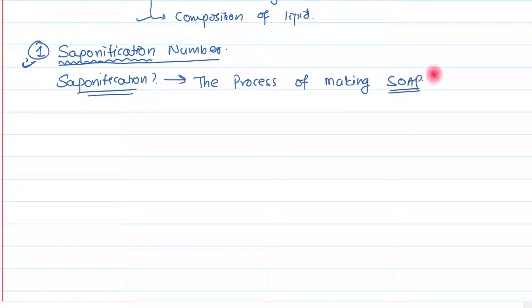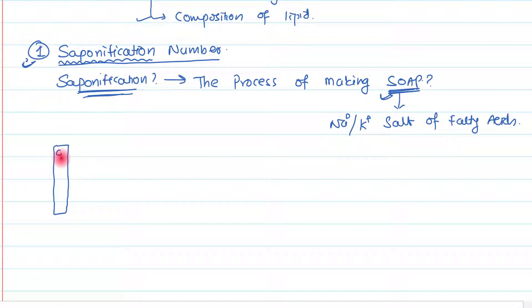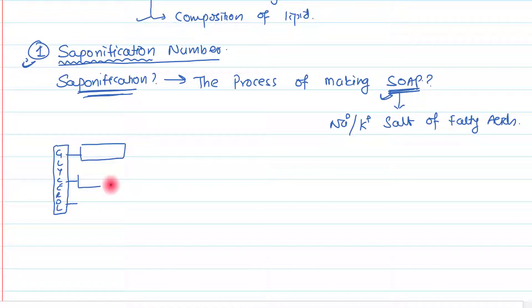Now the question arises: what is soap? Soap is simply the sodium or potassium salt of fatty acids. Now, how can soap be made? For example, if you have a triacylglycerol, we know that in the triacylglycerol we have one glycerol molecule. Glycerol has three carbons.